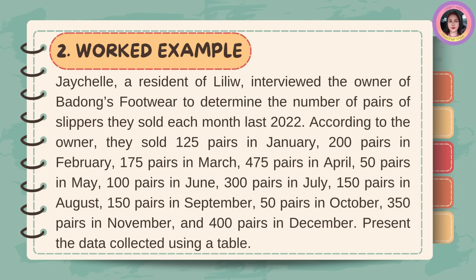Let us try this example. Keishel, a resident of Liliu, interviewed the owner of Badong's Footwear to determine the number of pairs of slippers they sold each month last 2022. According to the owner, they sold: 125 pairs in January, 200 in February, 175 in March, 475 in April, 50 in May, 100 in June, 300 in July, 150 in August, 150 in September, 50 in October, 350 in November, and 400 in December. Present the data collected using a table.